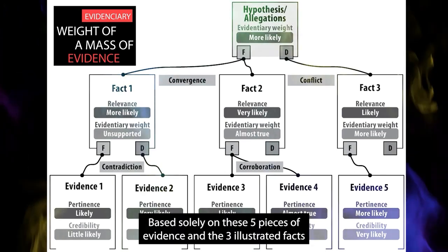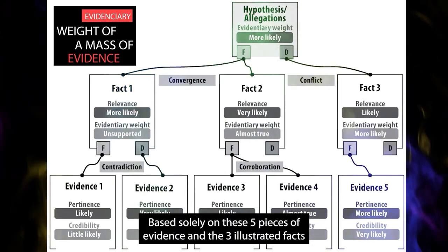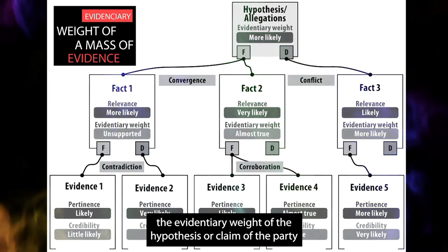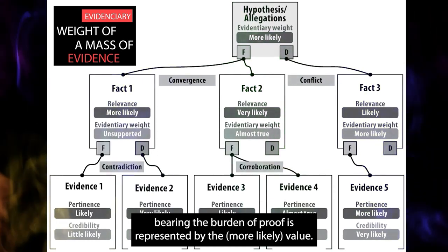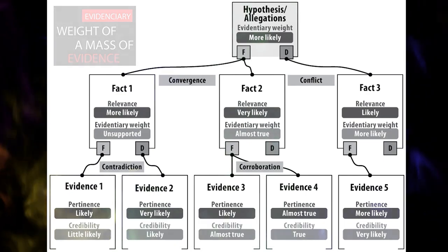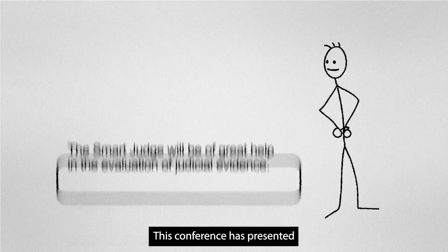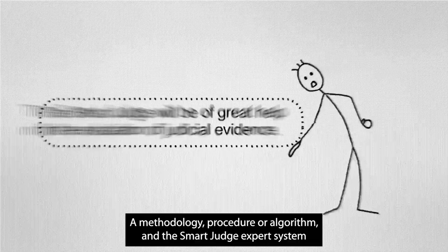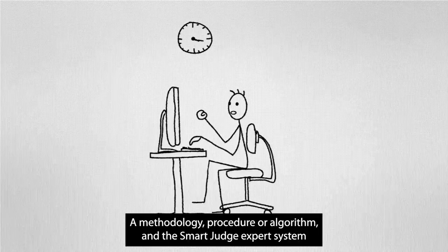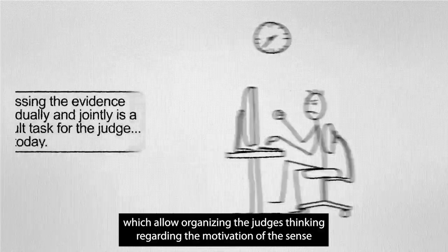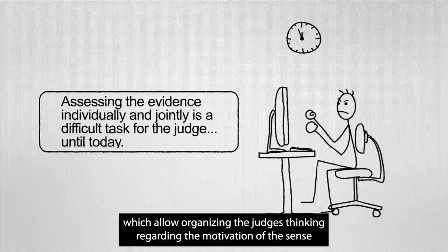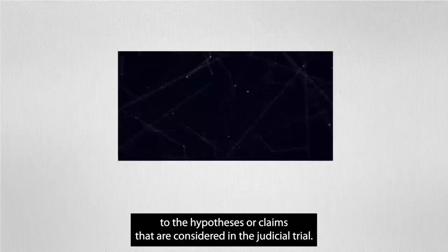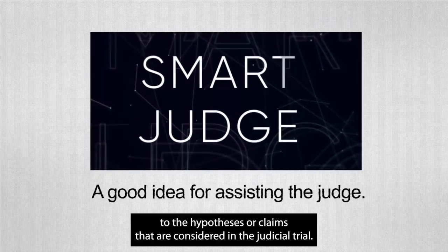Based solely on these five pieces of evidence and the three illustrated facts, the evidentiary weight of the hypothesis or claim of the party bearing the burden of proof is represented by the more likely value. This conference has presented a methodology, procedure or algorithm and the smart judge expert system, which allow organizing the judge's thinking regarding the motivation of the sense that decides the judicial trial, from the evidence of the facts to the hypotheses or claims that are considered in the judicial trial.